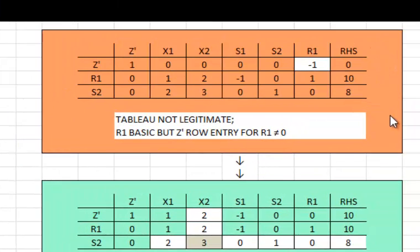This is our first tableau and again you notice that it is not a legitimate tableau because under R1 which is a basic variable I have a value other than 0. Therefore, I have to do a row manipulation with this operation. I will be multiplying R1 row by 1 and adding it up to the Z prime row.